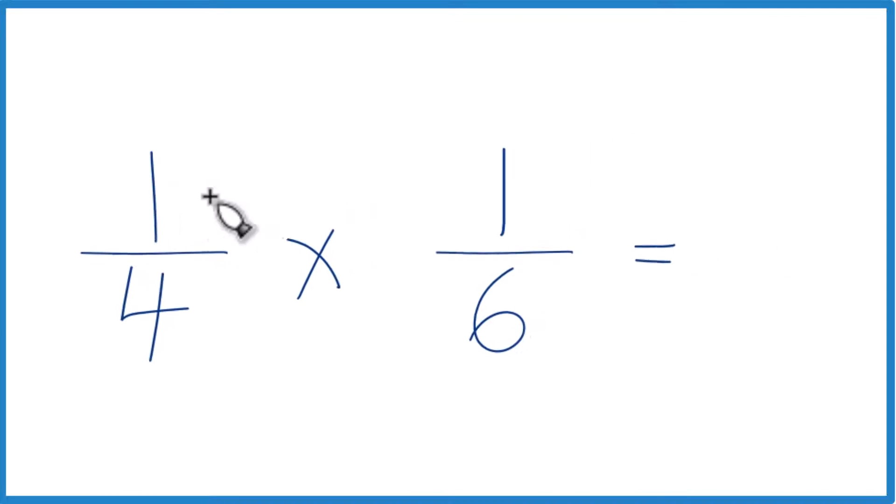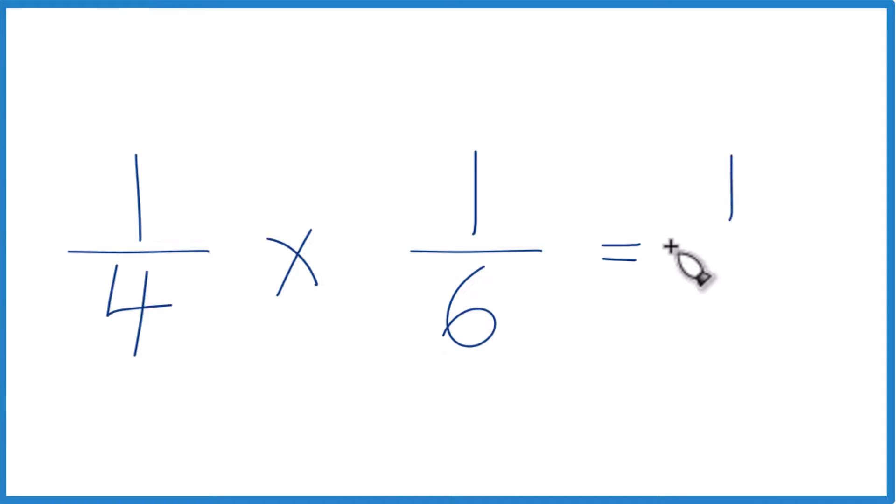We multiply the numerator, one times one, that's one, and then we multiply the denominators. Four times six, that's twenty-fourth. So we can say that one-fourth times one-sixth, that's one-twenty-fourth.